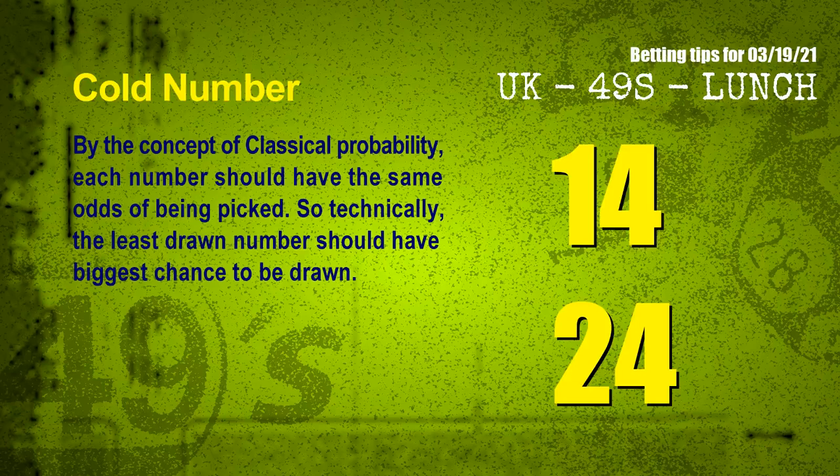In the end of this video, we have two more tips for you: cold numbers and overdue numbers. By the concept of classical probability, each number should have the same odds of being picked, so technically the least drawn number should have the biggest chance to be drawn. We counted thousands of results and found the coldest two numbers for the next draw will be 14 and 24.